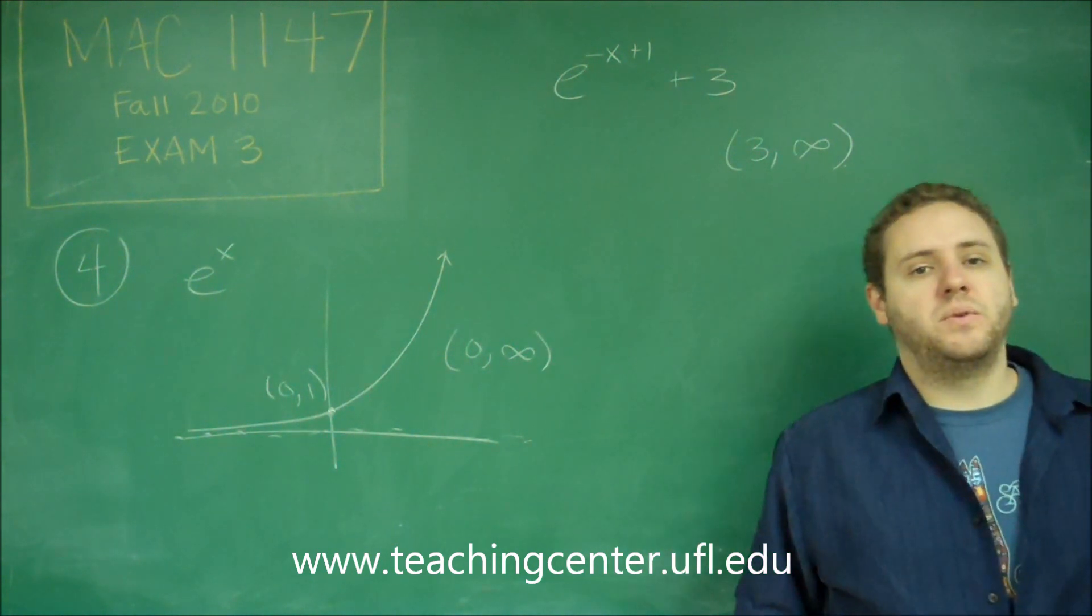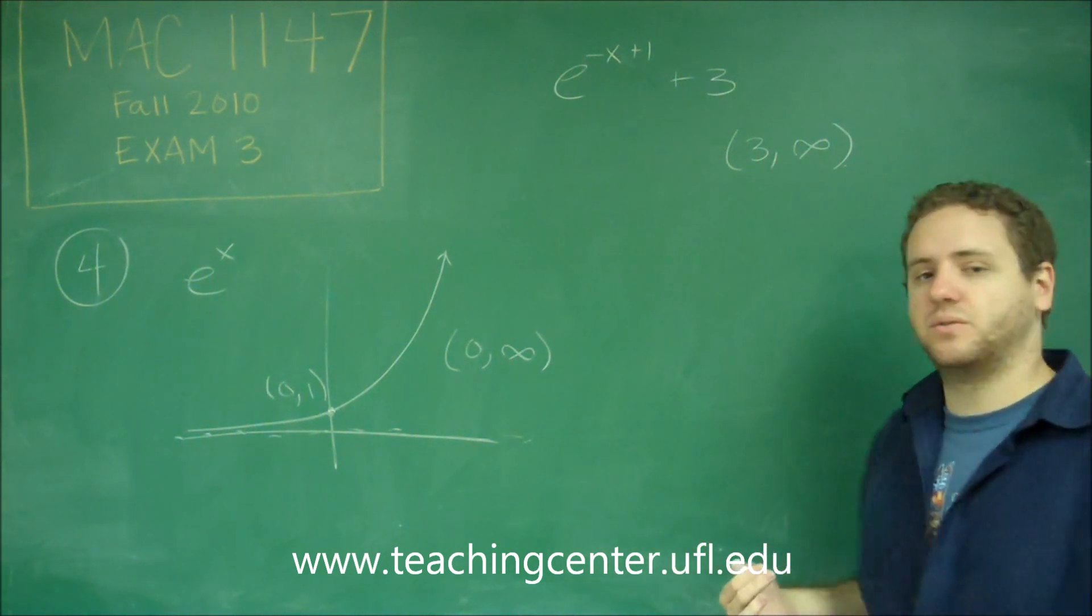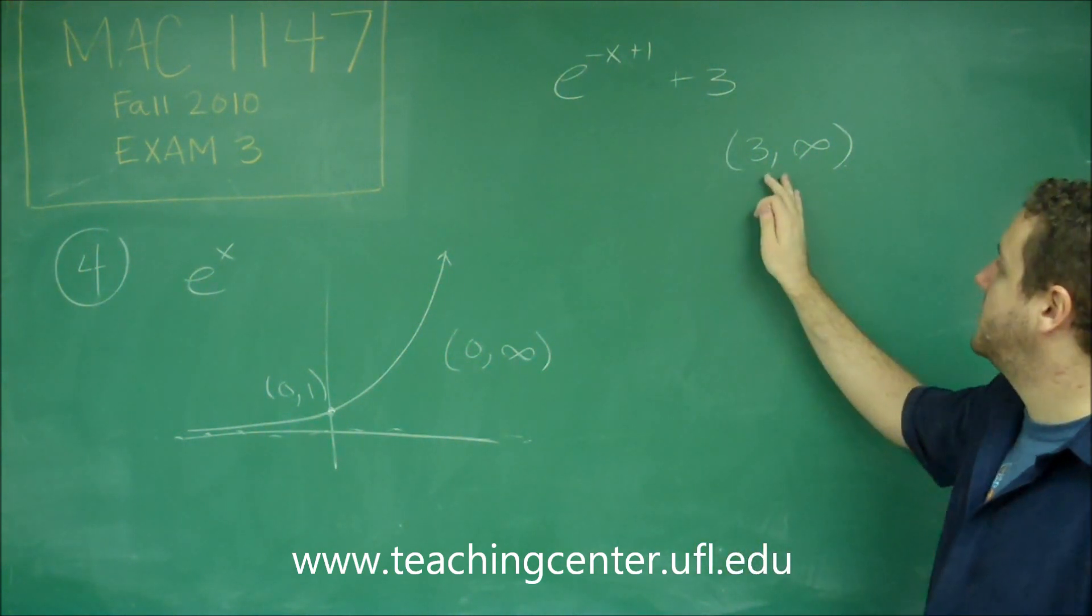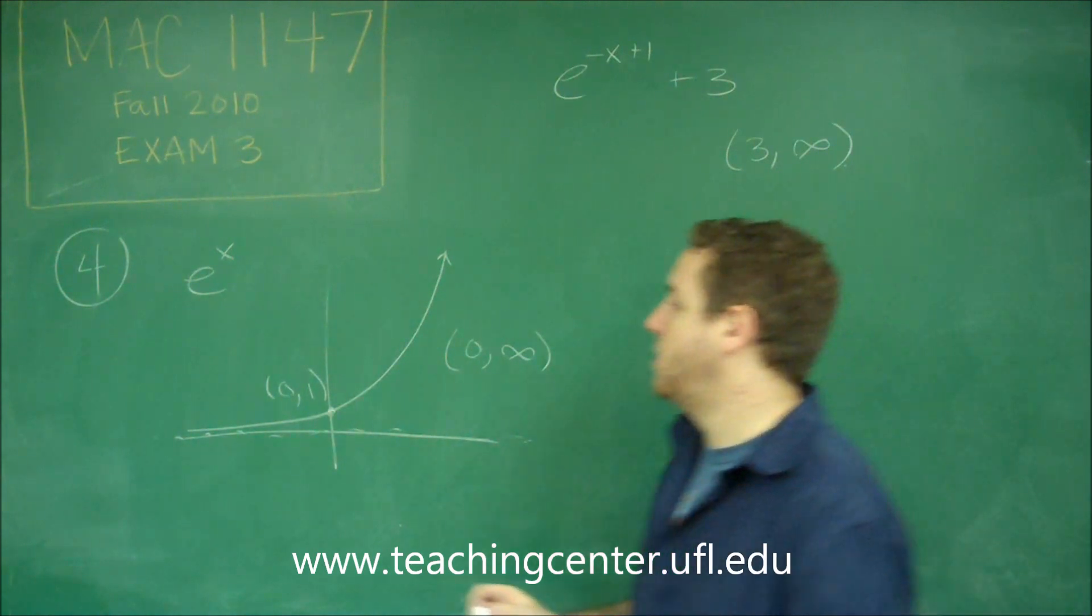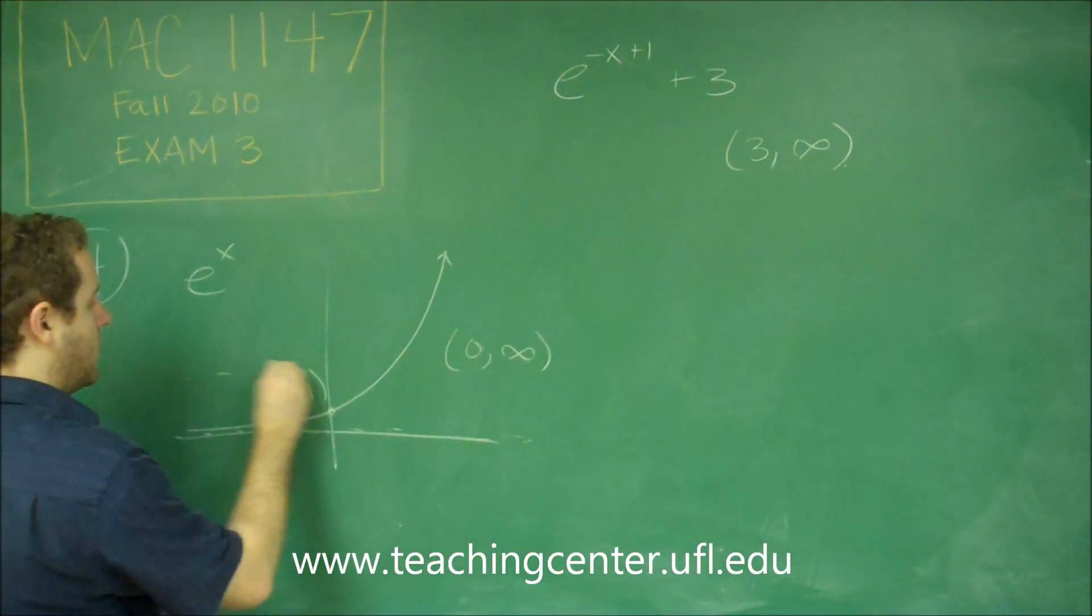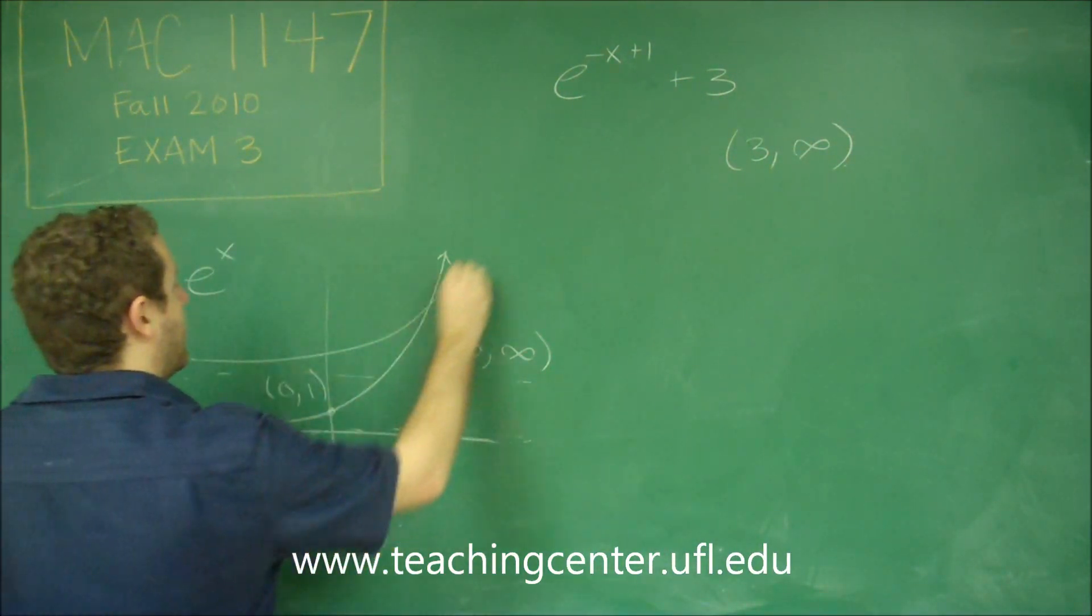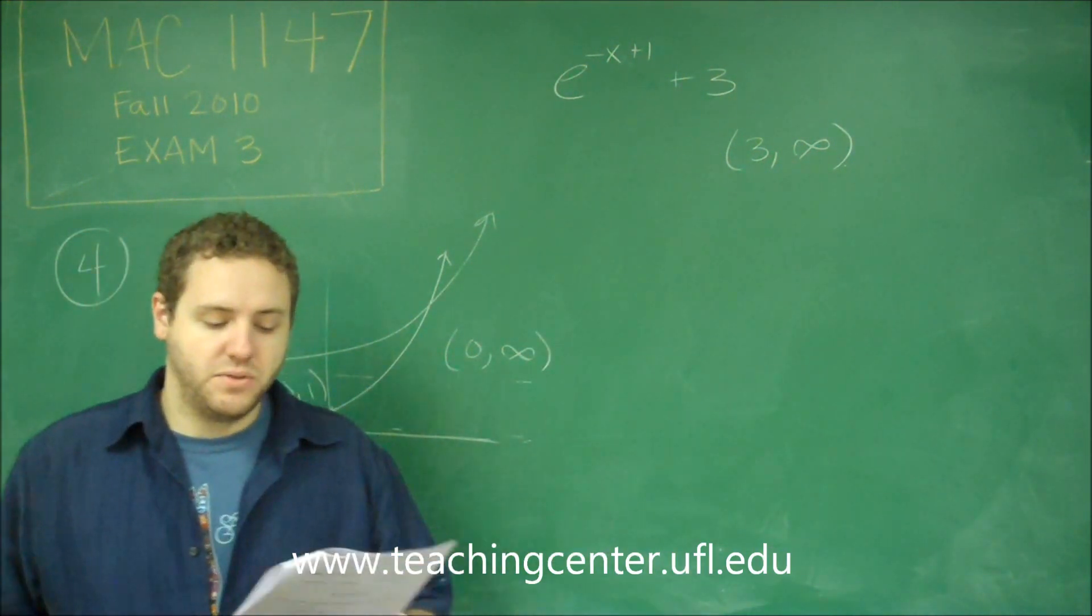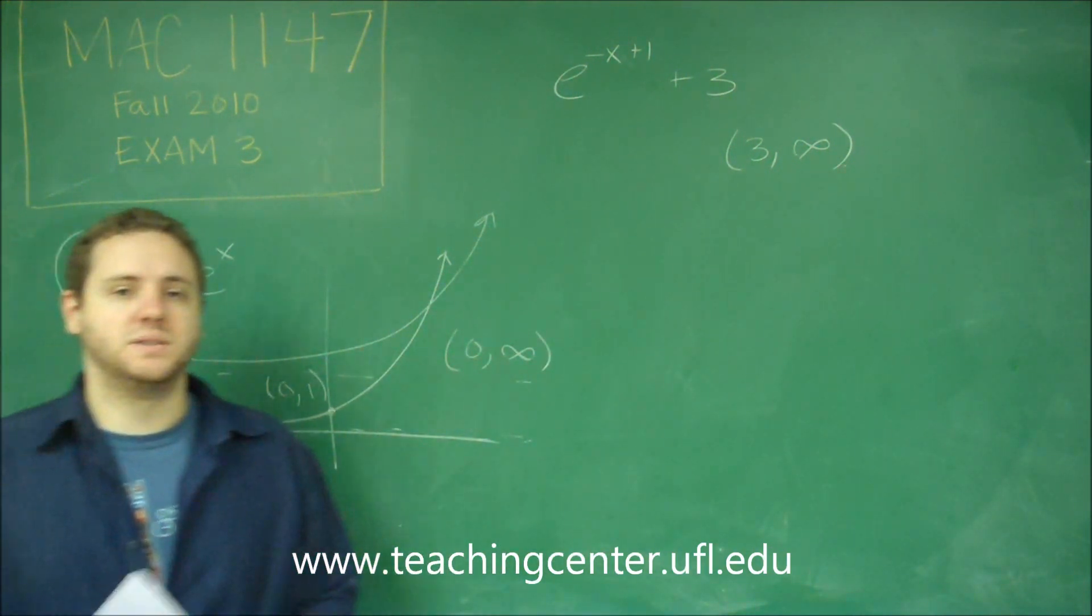Or if you were trying to find specific points on the graph, or anything like that, then yes, you would need to worry about this. But just since we're talking about the range, horizontal shifts and reflections don't change it. So all you have to worry about is the plus 3, and all that does is shift the graph up 3. You'd have a horizontal asymptote at 3, and the graph would be going up to infinity. So you just have a range of 3 to infinity, which is answer choice C.